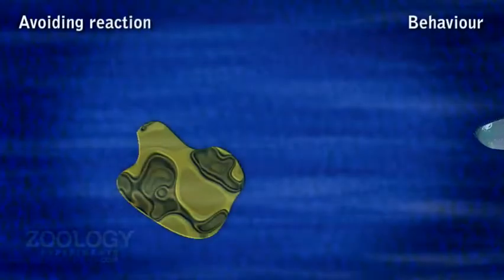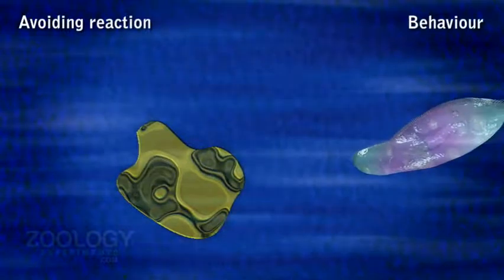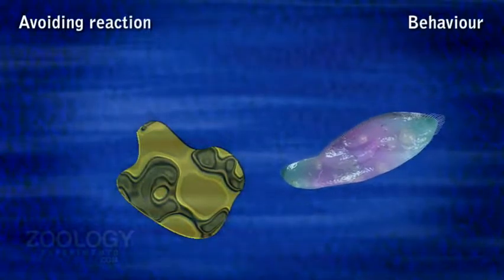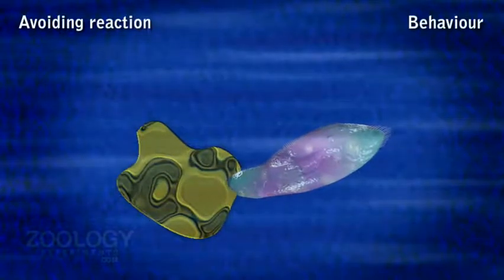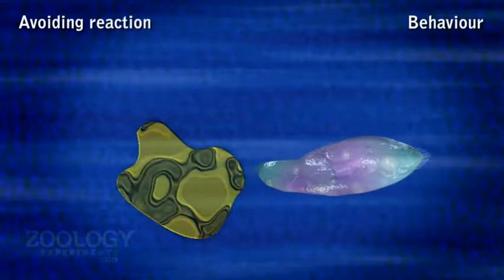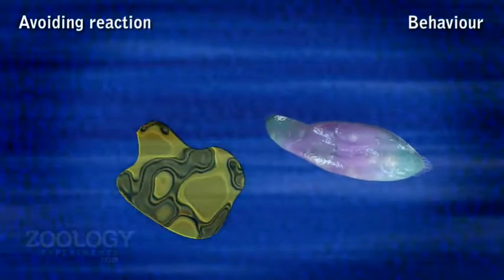Behavior number one: avoiding reaction. During fast swimming, when an individual strikes a solid object, it moves back for a short distance, turns on its side, and swims forward again but at an angle to its original path. It may repeat this.